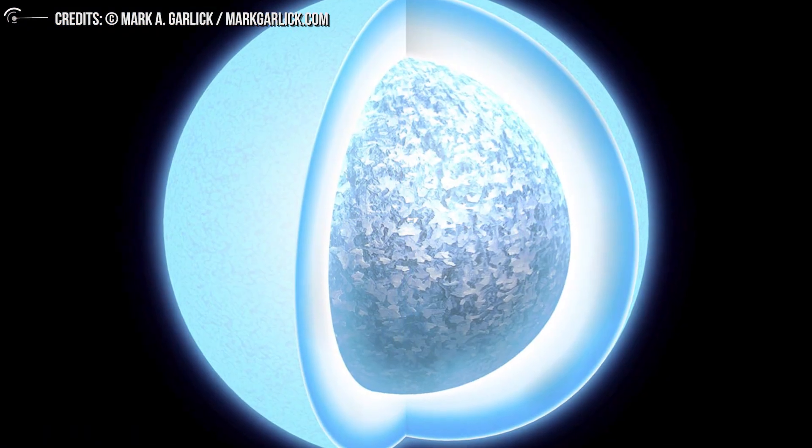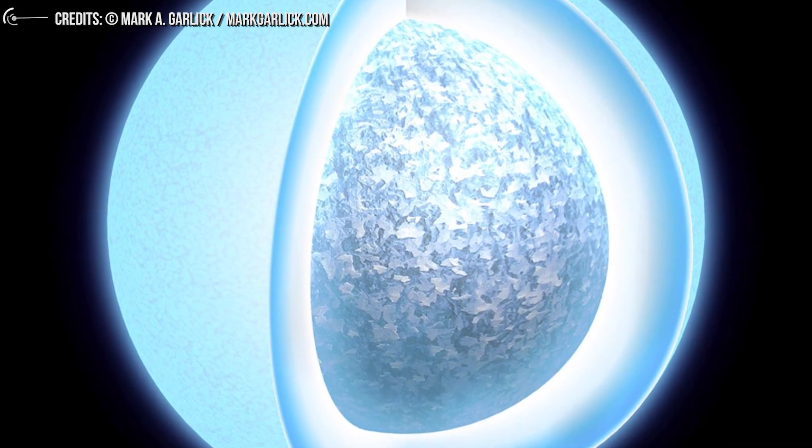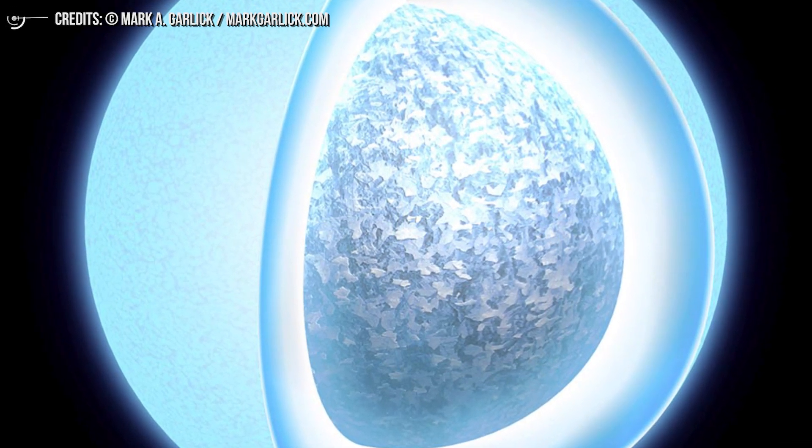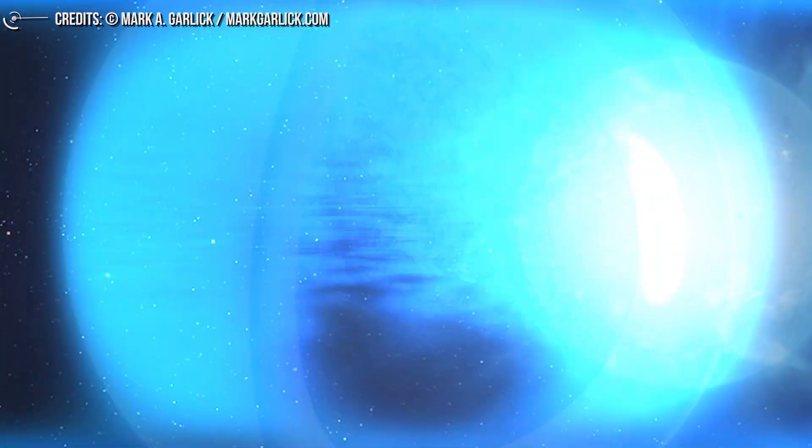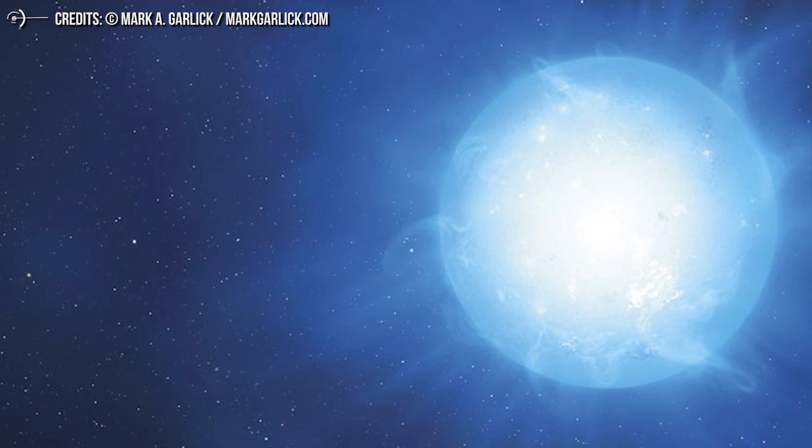White dwarfs in general are believed to be composed of carbon and oxygen, and a prediction from the 1960s said that cooling white dwarfs should begin to crystallize. If we found a pulsating variable white dwarf star, we could test our predictions. BPM 37093 is interesting because it allowed us to do just that. So we tested our crystallization concept, and guess what? It turned out to be correct.